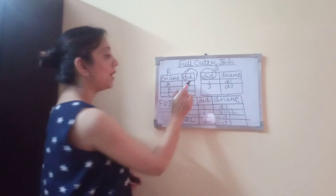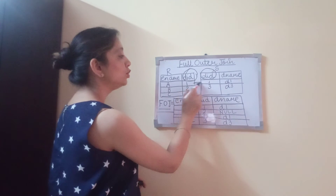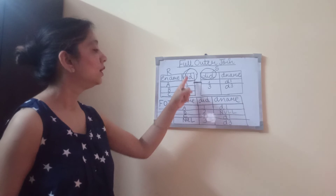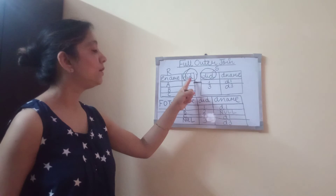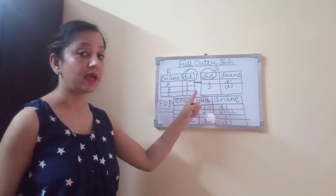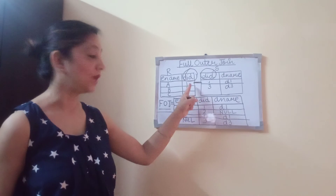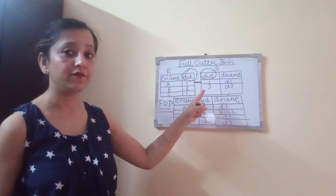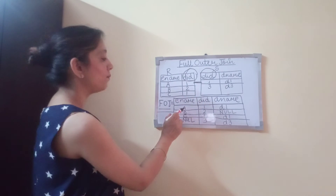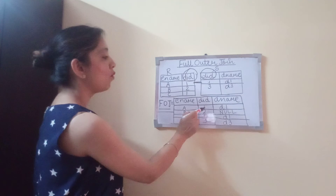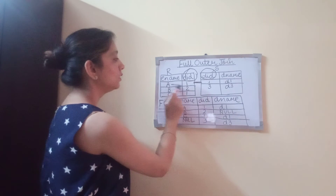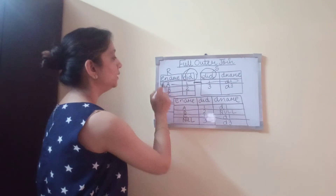Here we have matching values for the common column. Both the department IDs in both tables have the same value, which is 1. So we will copy A, 1, and D1. The first tuple is copied.